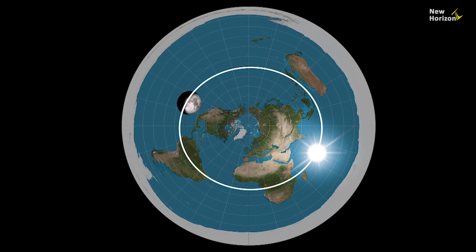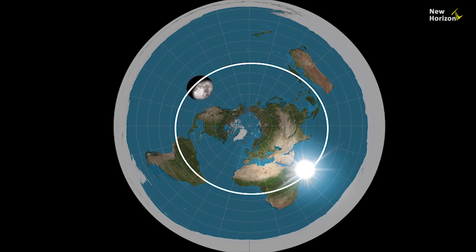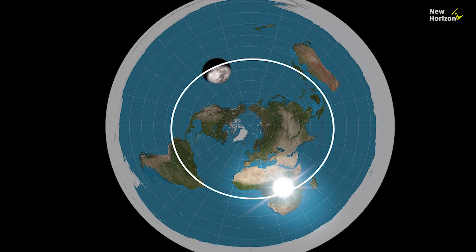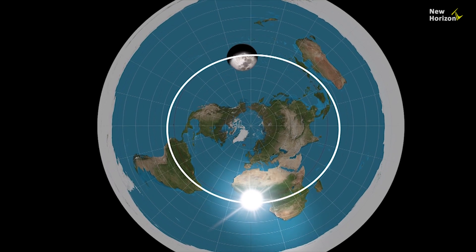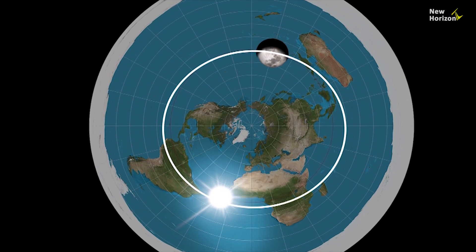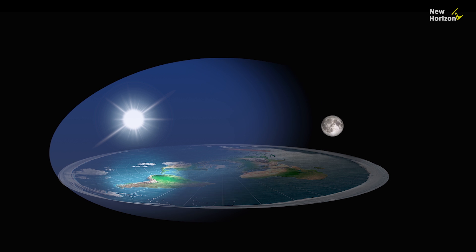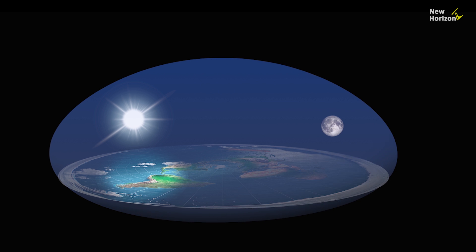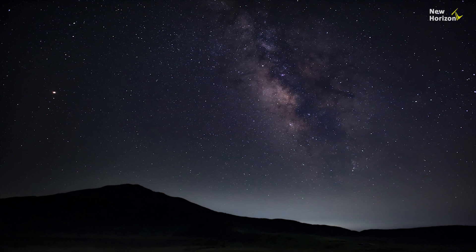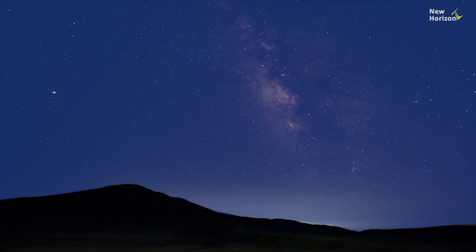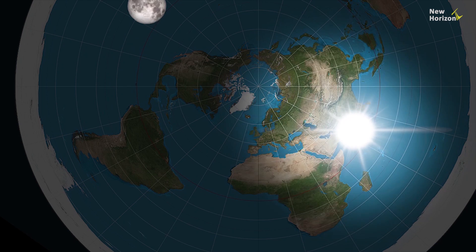According to the flat earth model, the Sun appears moving in a circle above the Earth's surface, meaning the Sun's path is always parallel to the Earth's surface. If it was true, we would see the sky glow even at night, since the Sun emits light in every direction.